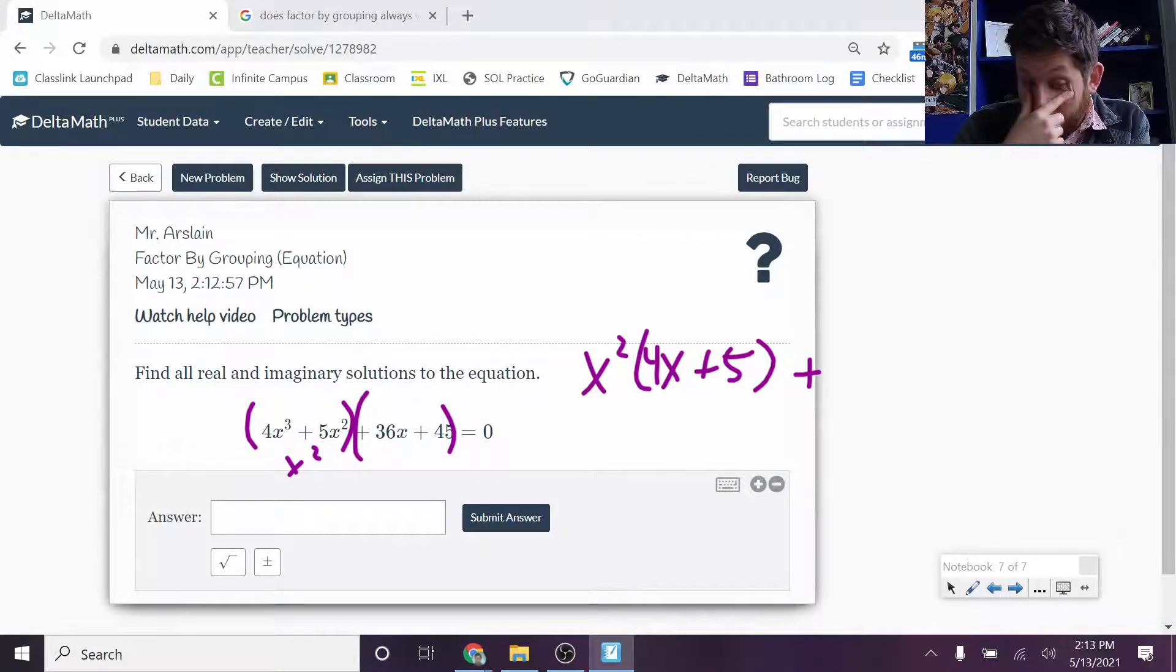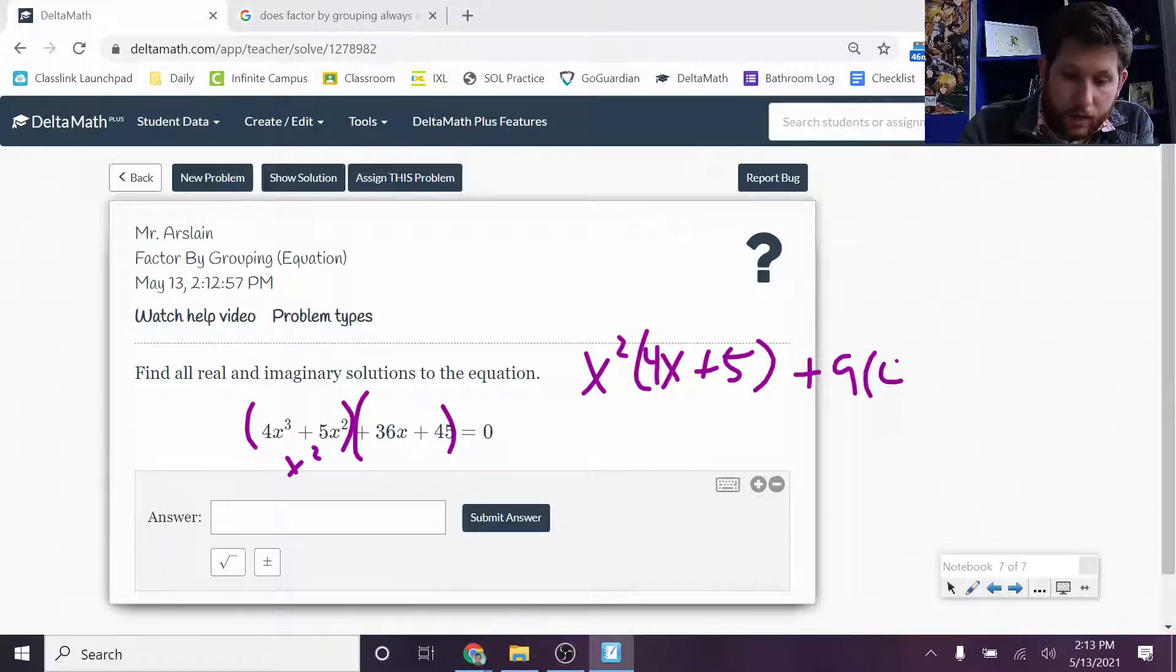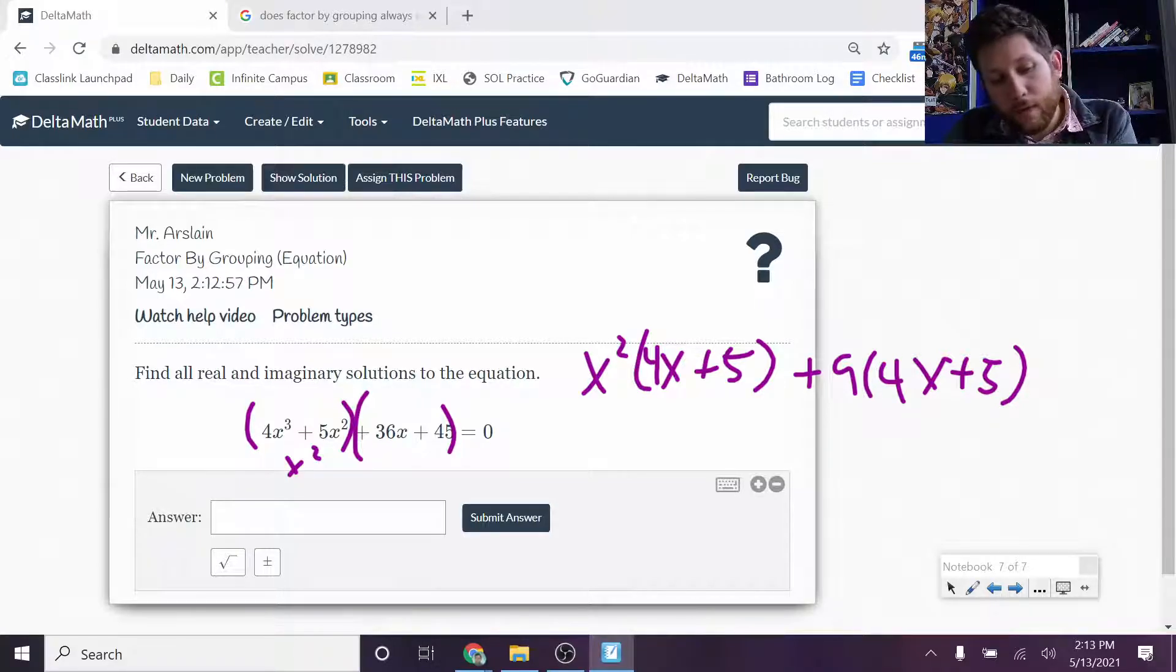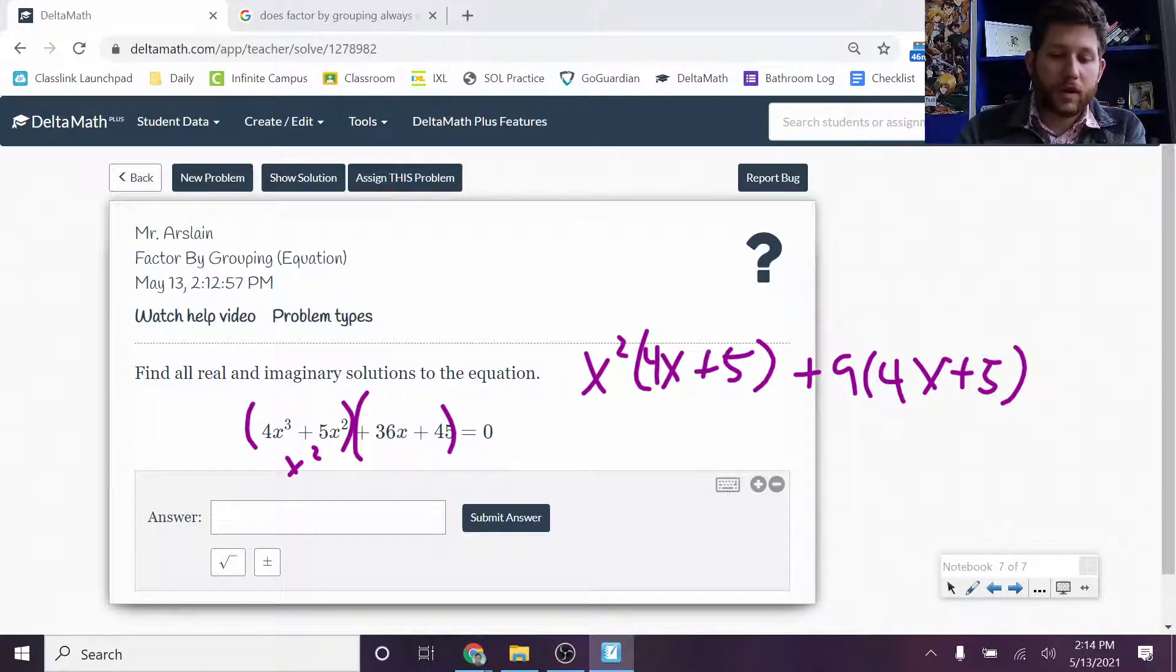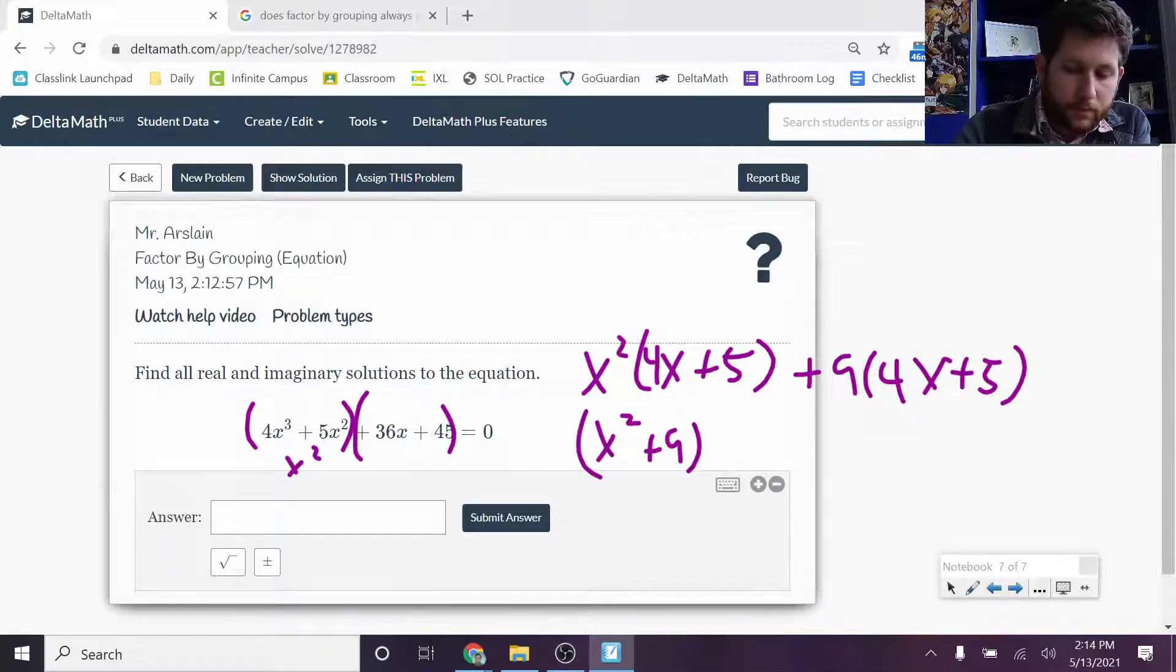So I've got 4x plus 5 plus 36 plus 45. Let's see. I could factor out a 9 out of both of those. So I've got 9, and I should get 4x plus 5. And I do. And that's a quick way to check. If you don't get the same binomial in the parentheses, it means that you probably didn't factor out one of them completely. Like if I factored a 3 out of this set right here, I would end up with 12x plus 15. But that doesn't match my 4x plus 5. So you should have matching binomials when you're done. So let's continue this. I get x squared plus 9 times 4x plus 5, that's equal to 0.